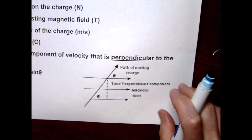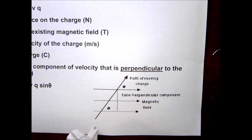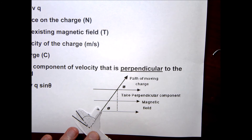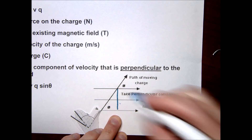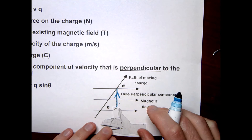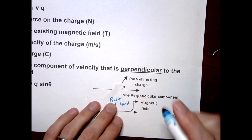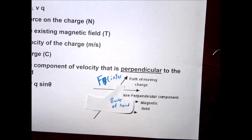Going back to the earlier example where the charge was coming in at an angle: it's easier to resolve the velocity into its perpendicular component. Taking the right hand with the thumb following the upward component of velocity and the B field going into the page, the palm ends up facing into the page — so the force on that charge is into the page.